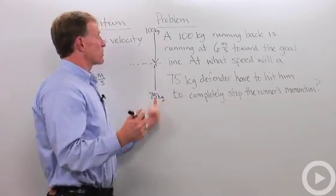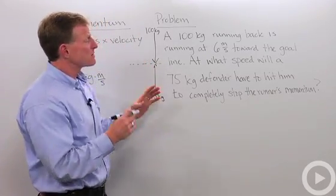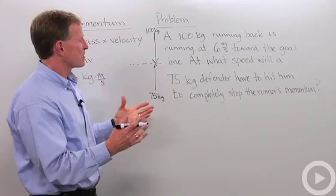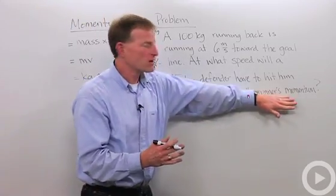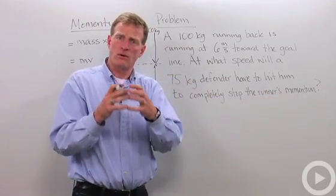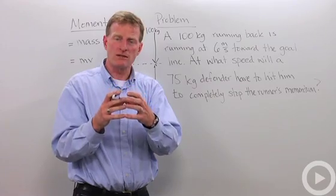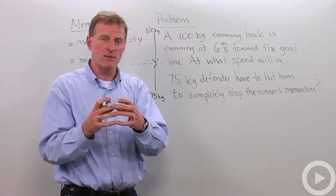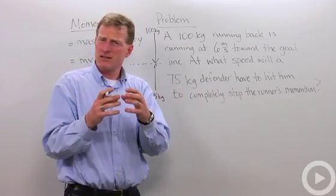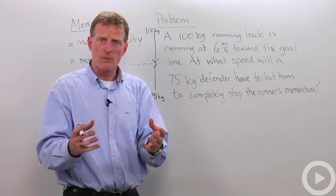So let's see how we would calculate that. In order to stop the runner, the runner would have to have no velocity, no momentum at the goal line. Because no matter how big an object is, if it has no velocity, it has no momentum.